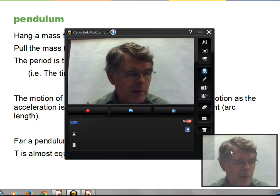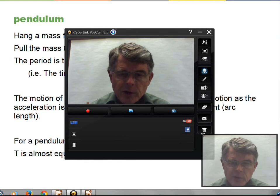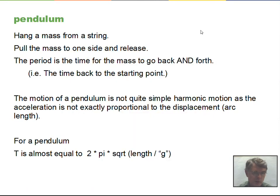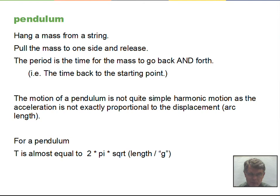This video will discuss the pendulum and general information on simple harmonic motion and its relation to circular motion. A pendulum can be constructed by hanging a mass from a string — make sure the string is strong enough and keep your feet clear. Pull the mass to one side with the top anchored, then release. The pendulum swings back and forth, and the period is the time for it to return to the starting position.